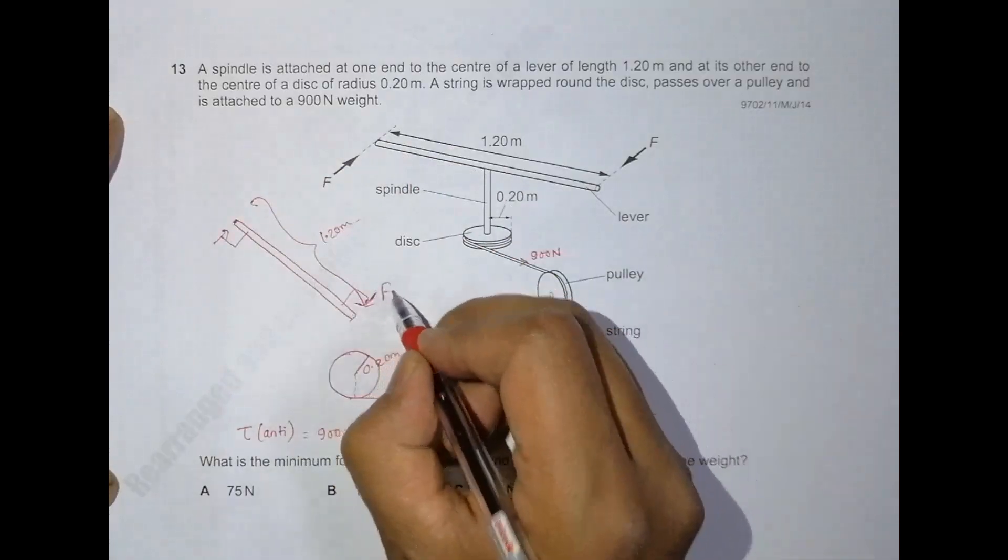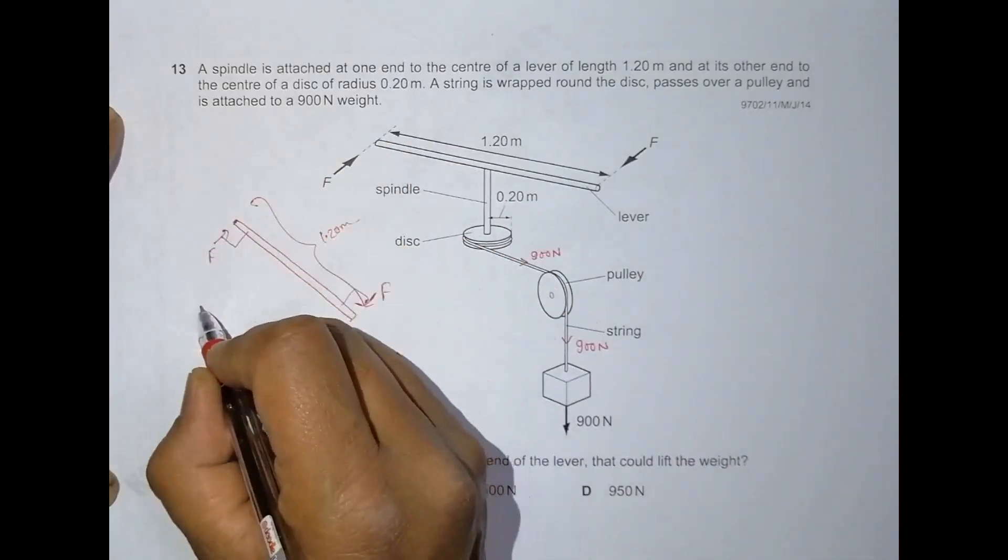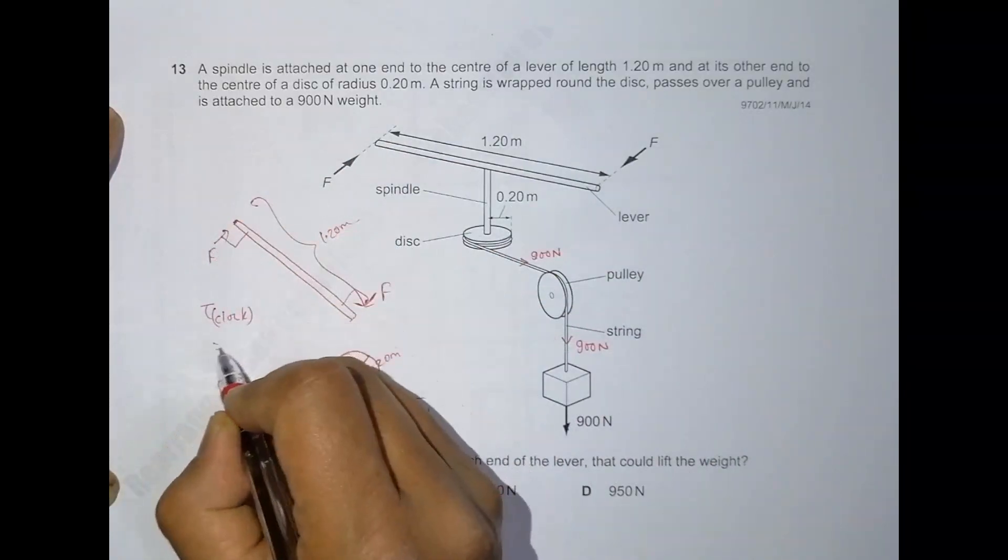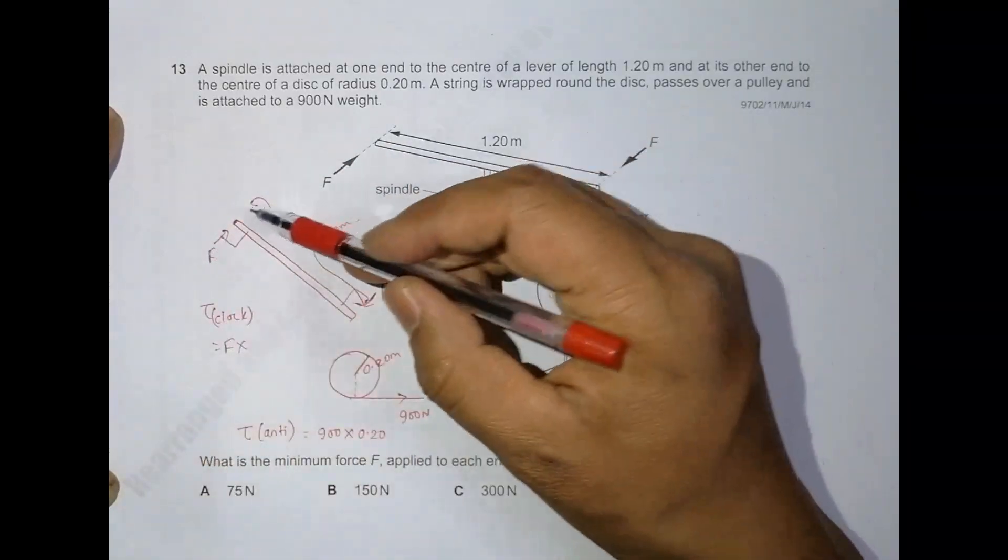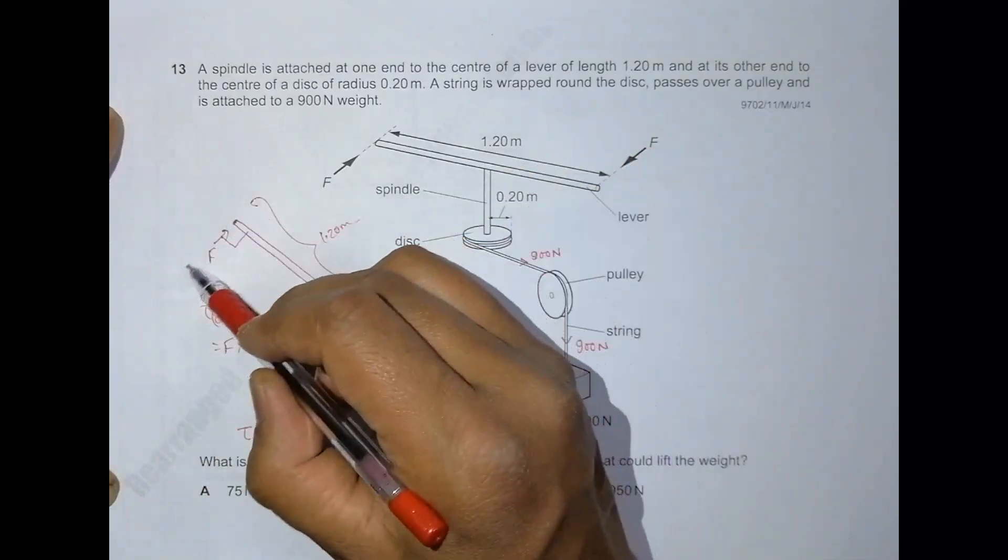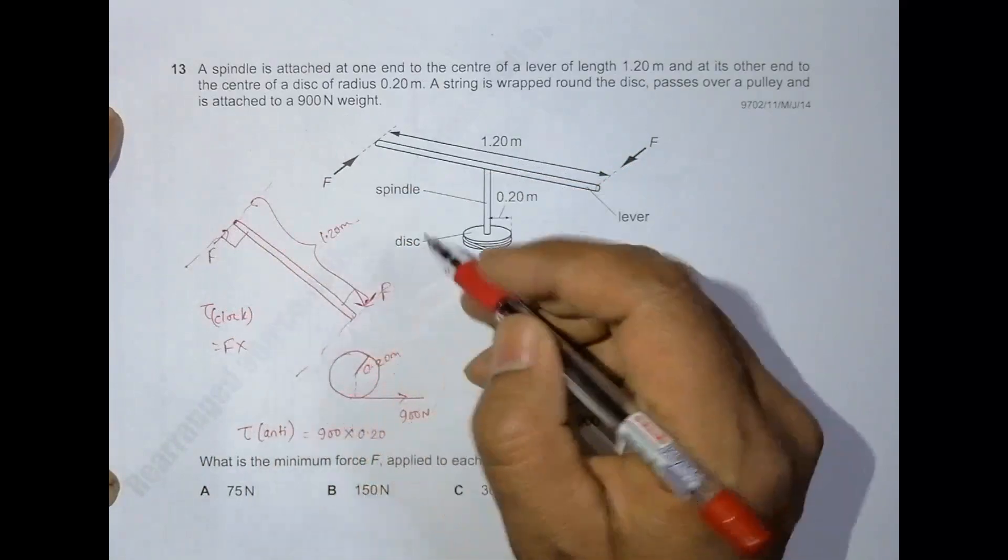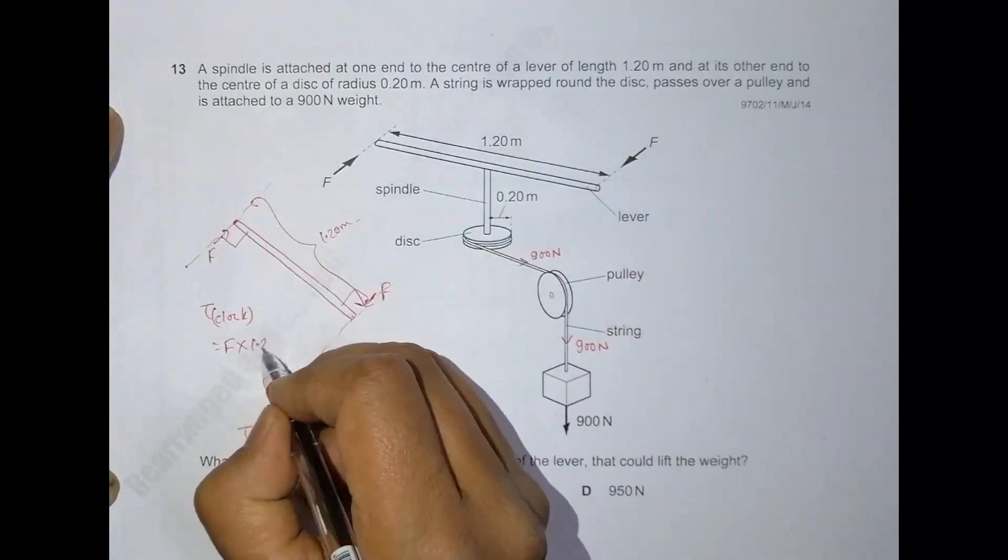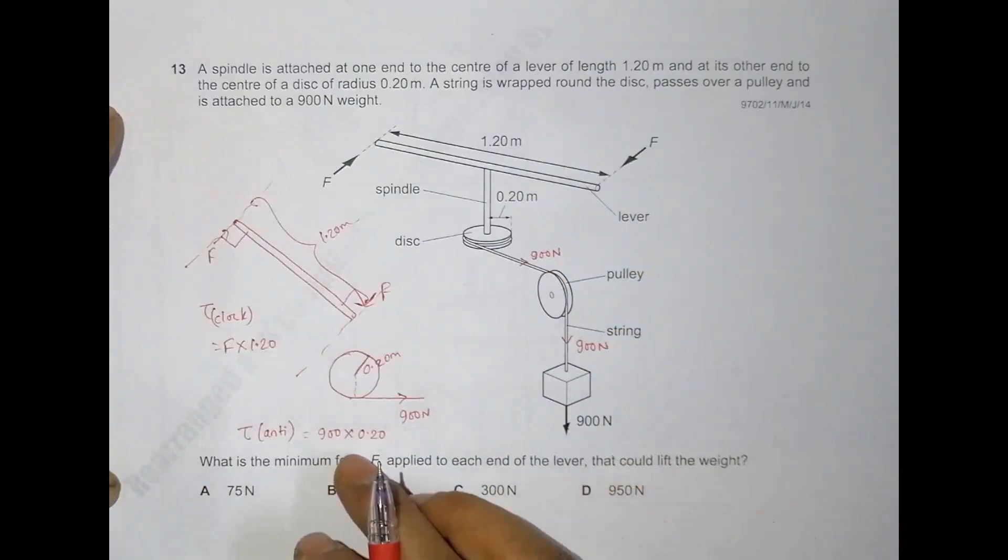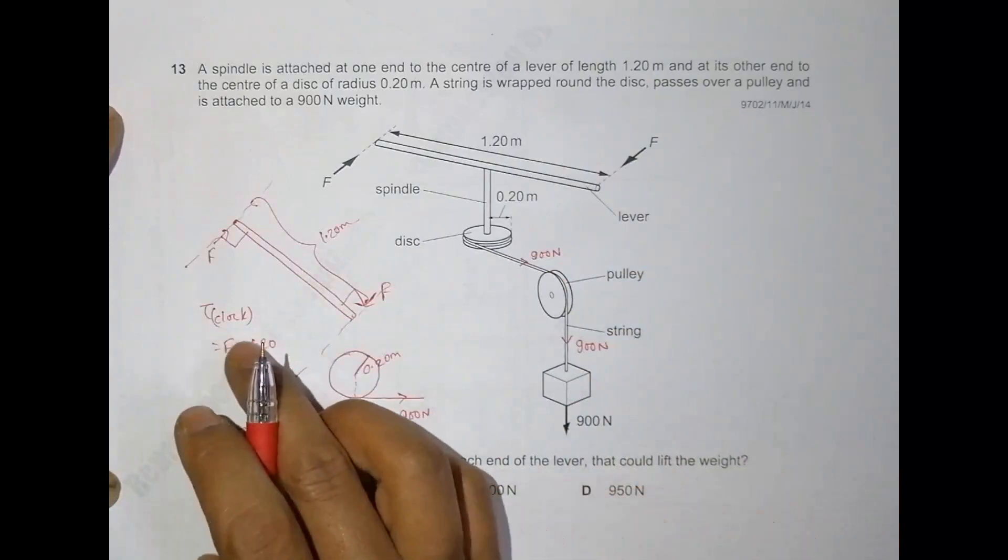The torque here, tau clockwise, will be equal to this force into perpendicular distance between the lines of action of the two forces, which equals 1.20 meters. In order to lift that thing, I have to make this torque at least equal to this torque.